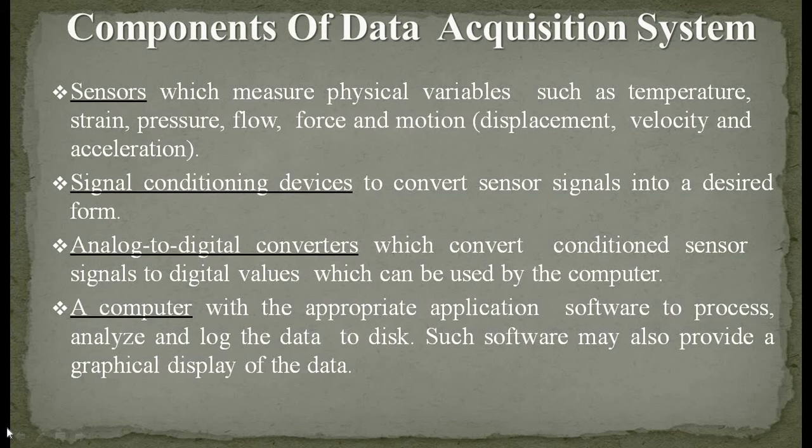Next are signal conditioning devices to convert sensor signals into the desired form. Then analog-to-digital converters, which convert conditioned sensor signals to digital values that can be used by a computer. And lastly, a computer with the appropriate application software to process, analyze, and log the data to disk. Such software may also provide a graphical display of the data.